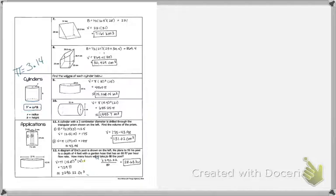Moving on, the formula is: volume equals pi r squared times height. That means we need the radius and the height. We may have to use the Pythagorean theorem to solve for the radius or the height if they aren't directly given. So we're looking at number 9.